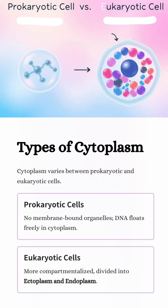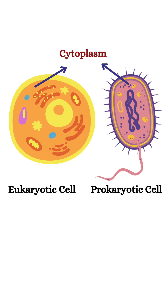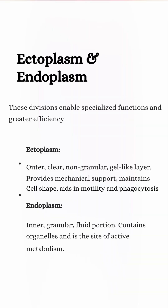Prokaryotic cells like bacteria don't have membrane-bound organelles, so everything including the DNA floats freely in the cytoplasm. But in eukaryotes, the cytoplasm is more compartmentalized, divided into ectoplasm and endoplasm. This compartmentalization allows for specialized functions and greater efficiency.